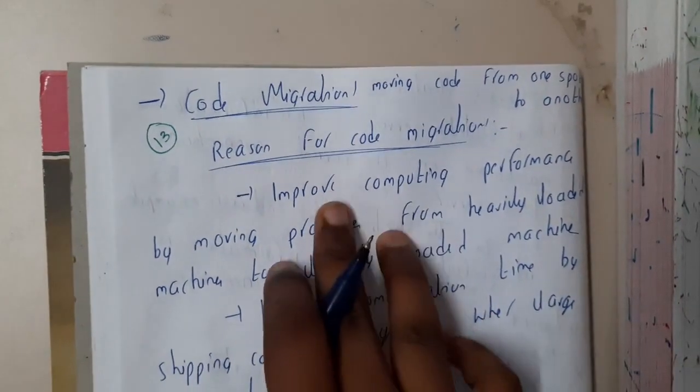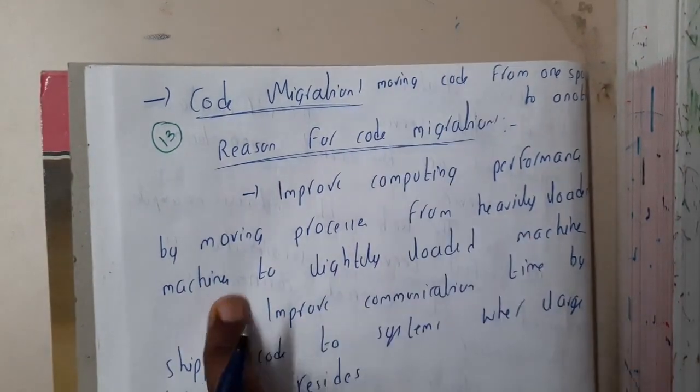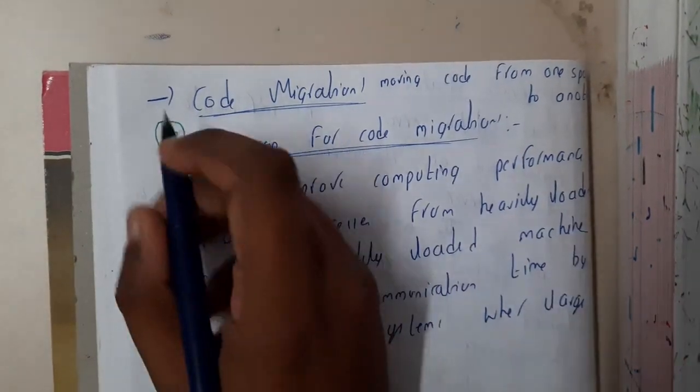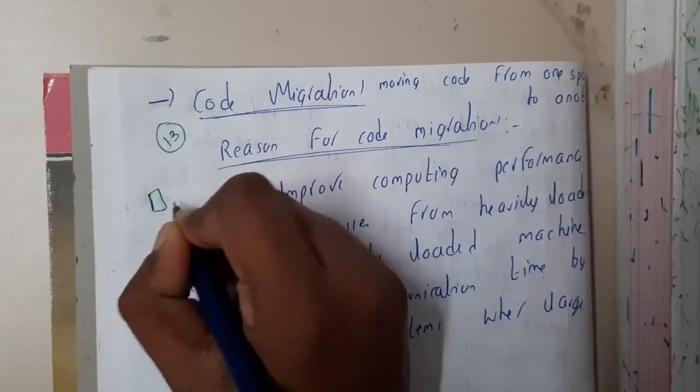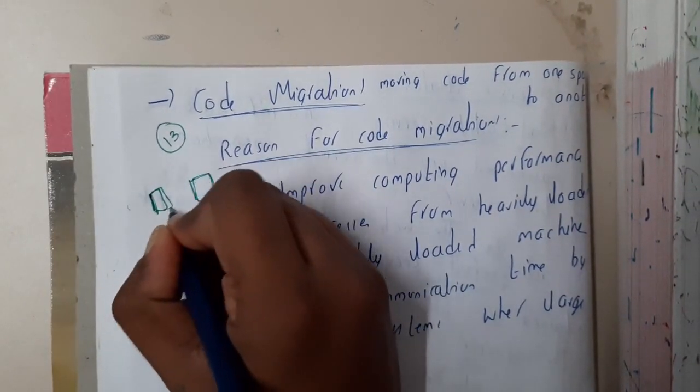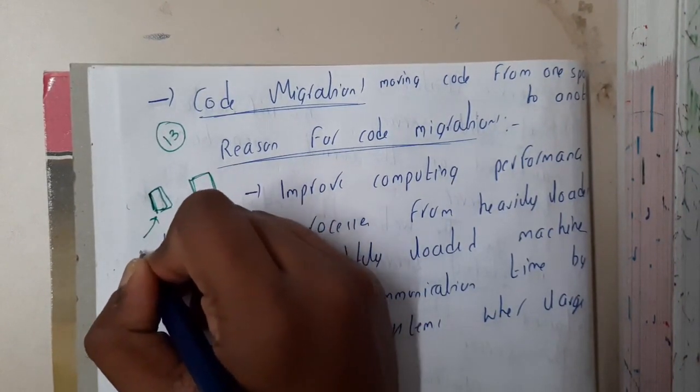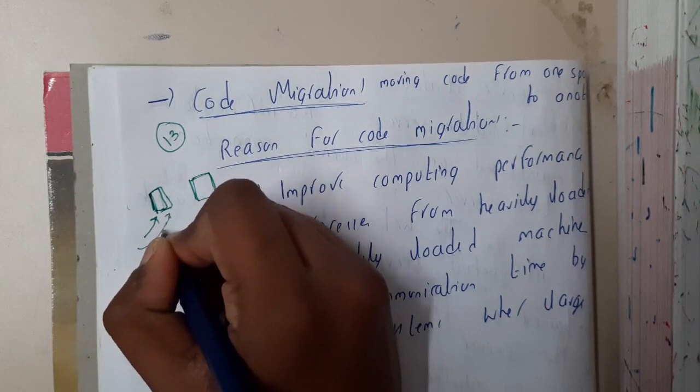The reasons are to improve computing performance by moving processes from heavily loaded machines to lightly loaded machines. Assume that you hosted your website in two different servers and you wrote code that whenever there is a load on one server, even though the response could be faster, you force the request to go to the second server. Here you are balancing the load.